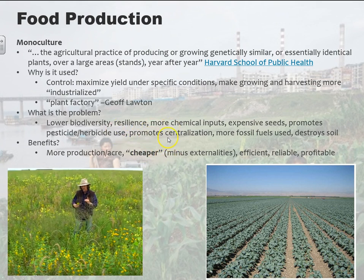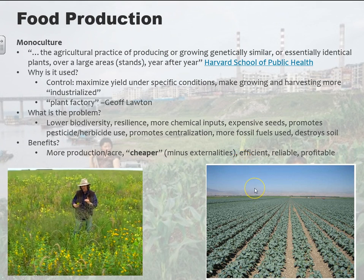The problem is with all these drawbacks, at some point it may not be cheaper, because we're promoting superbugs, losing our soil, and so forth. But to be fair to monoculture and industrial farming, it does tend to make crops cheaper — at least if you're not looking at externalities like climate change. It is very efficient, reliable, we can control conditions very specifically, and it is very profitable. There are definitely benefits, certainly in the short term.